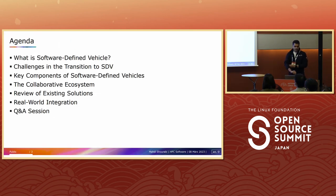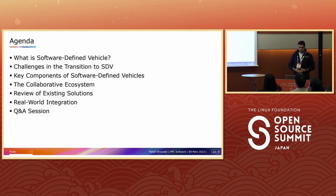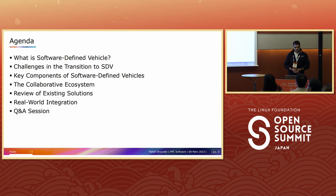The agenda I'm going to talk about: what is software defined vehicle, the challenges on the way of SDV, and the key components of this topic. We'll also talk about collaborative ecosystems and how open source can help, and after that I will present some of our developments at AVL Software and Functions about software defined vehicle.